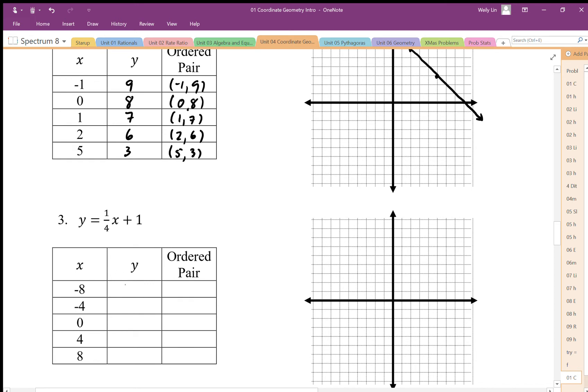Multiplying by a quarter, we end up with negative 2 plus 1 is negative 1, so negative 8, negative 1. And negative 4 gives us 0. Zero gives us 1. Four gives us 2.